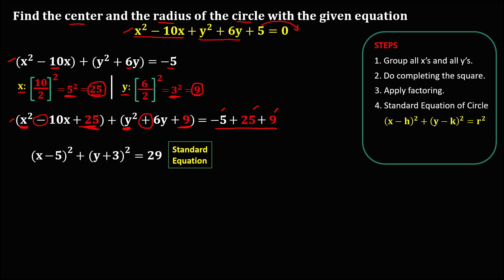From the standard equation, we can find the center, that's h and k, and the radius r. In the standard form, we identify h, k, and r squared. To find the center: for h, since the term is (x minus 5), the sign is negative so h is positive 5. For k, since the term is (y plus 3), k is negative 3. So the center is (5, negative 3).